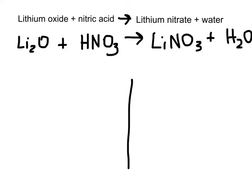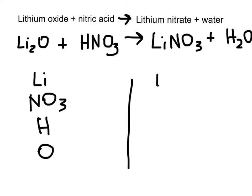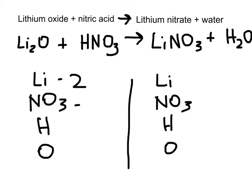Next step: draw a line down the middle and add up the elements on either side. Lithium and nitrate are the groups, and then hydrogens and oxygens. On the left side: two lithiums, one nitrate group. For hydrogen, just one hydrogen over here. For oxygen, we don't count the ones inside the nitrate group — just the separate oxygen — so one.